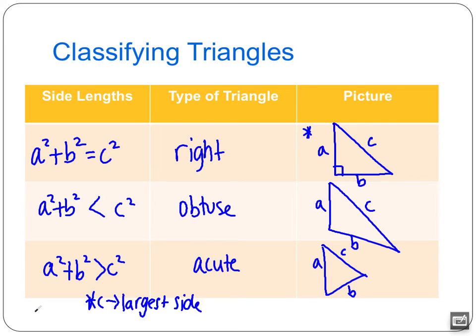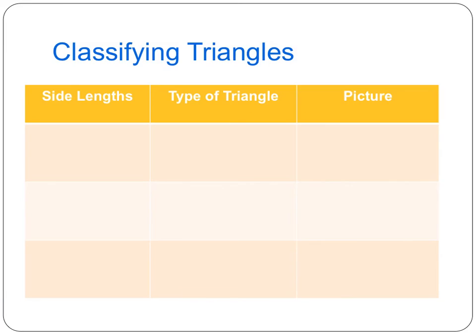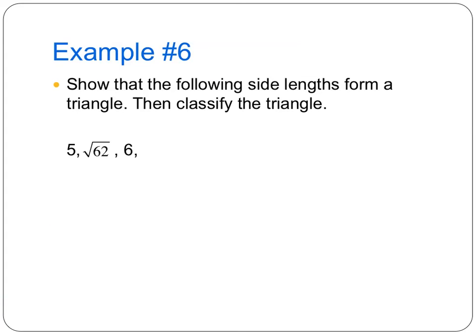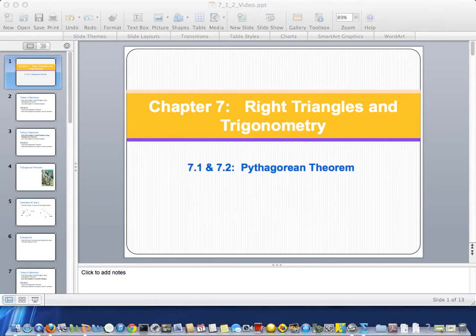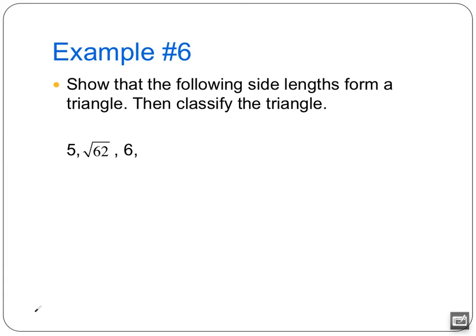So we're going to do one example together. You're going to do one on your own, and then we are finished with notes. Here's the example that we're going to do together. It says show that the following side lengths form a triangle, then classify the triangle. So first thing that we're going to notice is we have square root of 62. I'm not a big fan of that number, and I'm going to bet that you all are not a big fan of that number. So I'm going to change that to a decimal. Square root of 62 is about 7.87.